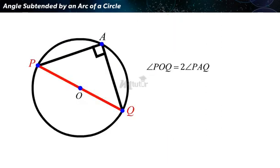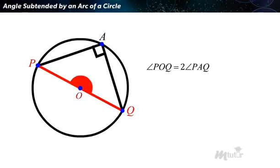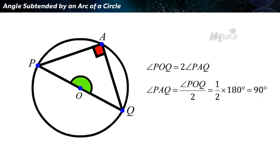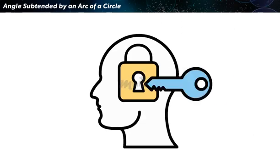Also, if the chord PQ is the diameter of the circle, since the angle on a straight line is 180 degrees, angle POQ is 180 degrees. Thus, angle PAQ is 90 degrees as shown on the screen. Therefore, the angle in a semicircle is a right angle. We shall now solve a few problems using these results.